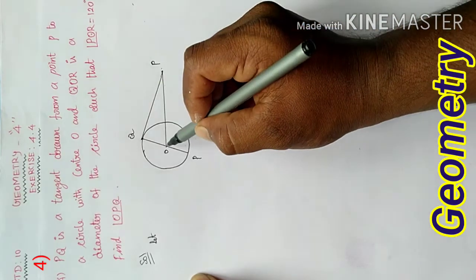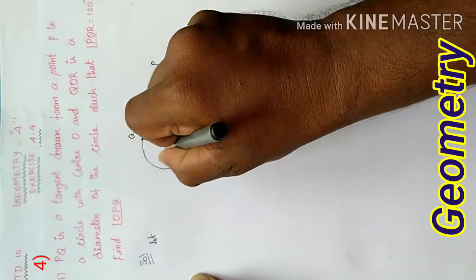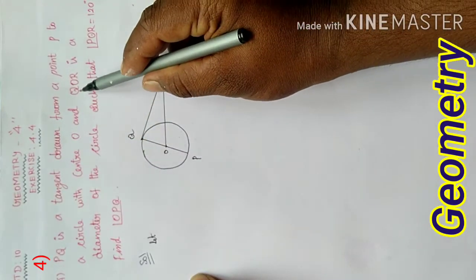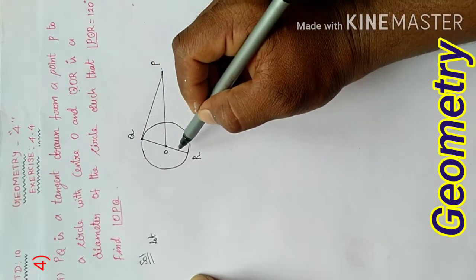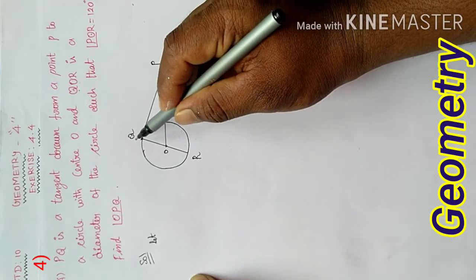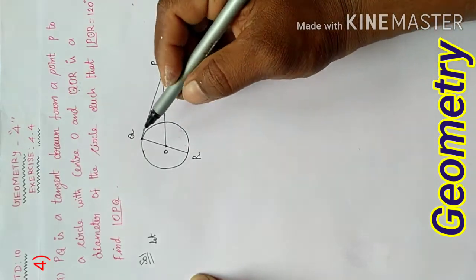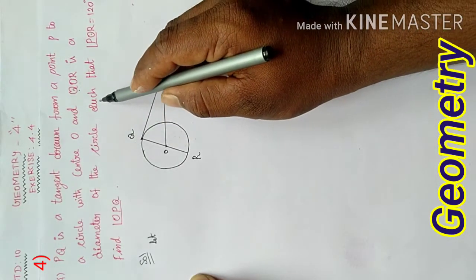Next, point O is the center point. Circle with O as center point. QOR is a diameter. That is the diameter.